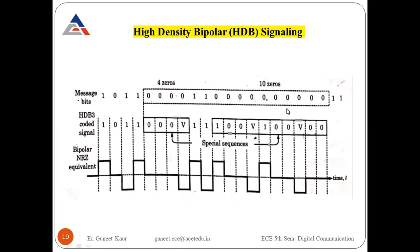The special sequences used are 000V (triple zero V) or 100V (one double zero V), and so on. To plot the HDB3 waveform, we first plot the AMI signal: for a one we draw a high signal, for a zero it is zero, and alternate mark inversion is applied.